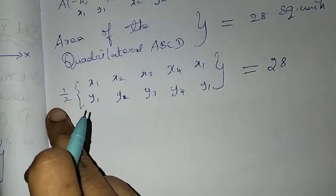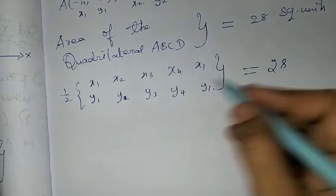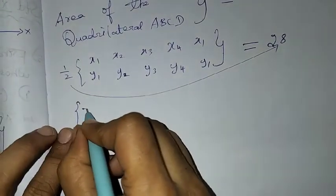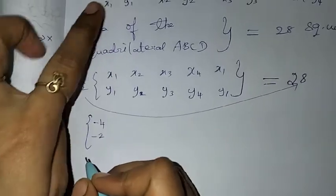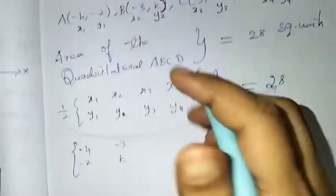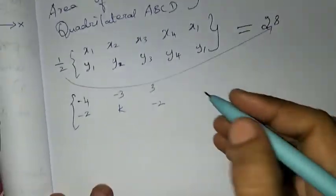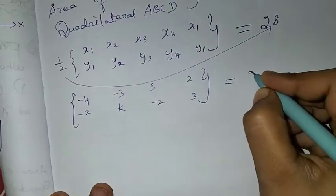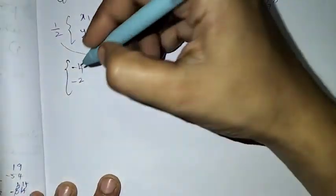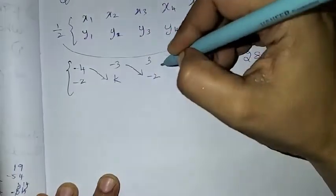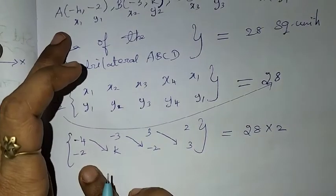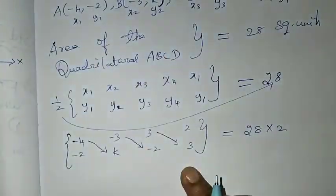Now I will substitute the values into the formula. The coordinates are: (-4, -2), (-3, k), (3, -2), and (2, 3). Area equals 28, so 28 into 2 equals 56. We perform up-and-down multiplication.